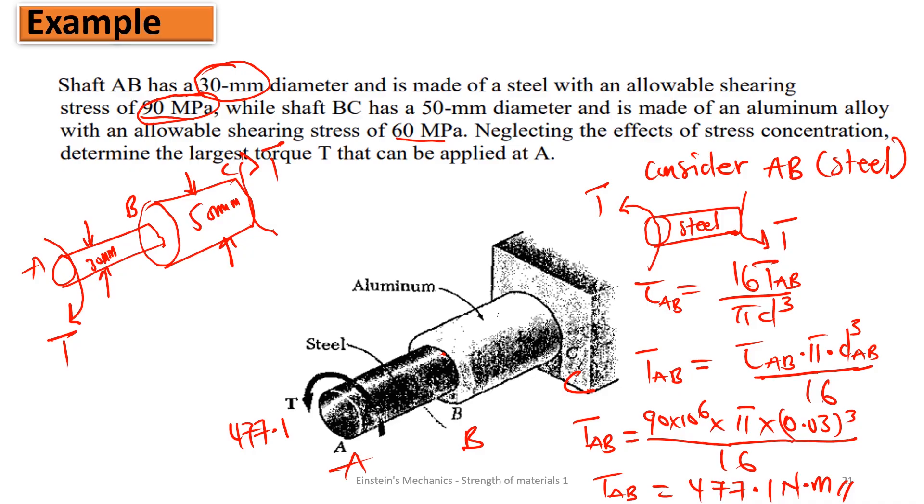So meaning if we apply this torque of 477.1, then it is going to twist the same member. Now there's an analysis here that we can make. We can also calculate for the torque inside the aluminum, the maximum that it can contain. This means that with all the parameters given, the 30 mm diameter, the shear stress given, the only torque that can be contained by the shaft AB is 477.1 newton meter.